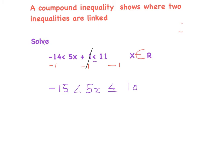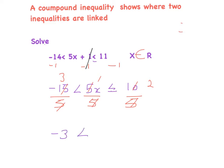Now I'm looking to isolate x. I have 5x so I divide by 5, and I must do it to all three sections. 5 goes into minus 15 three times, 5 goes into 5x once, and 5 goes into 10 twice. My new line reads: minus 3 < x ≤ 2.